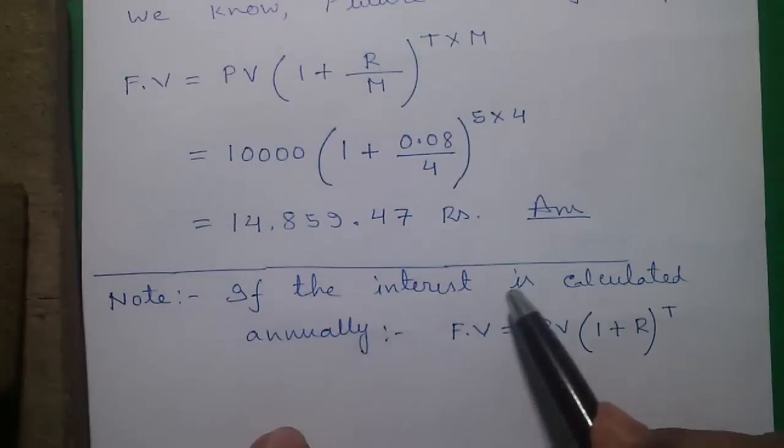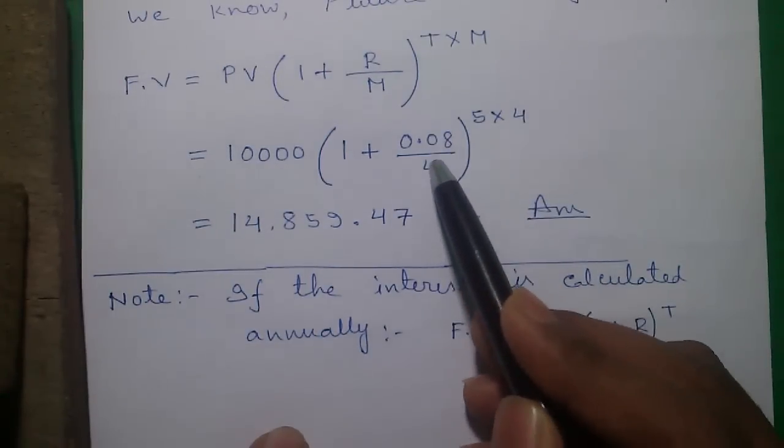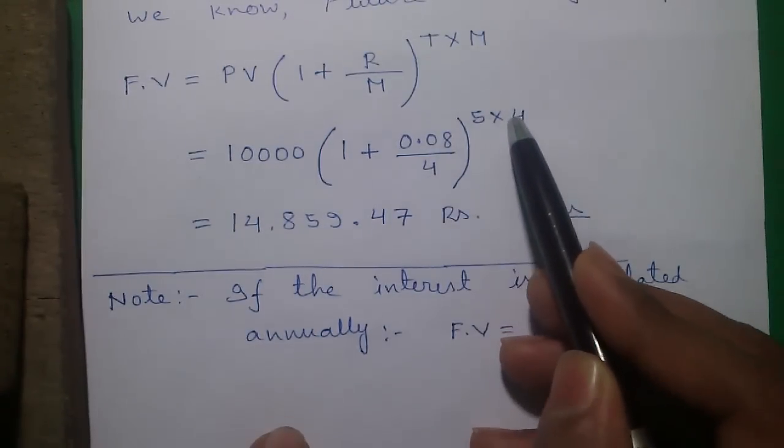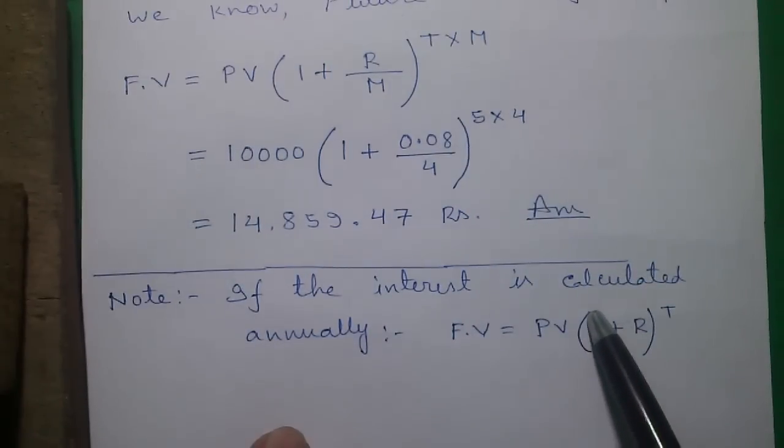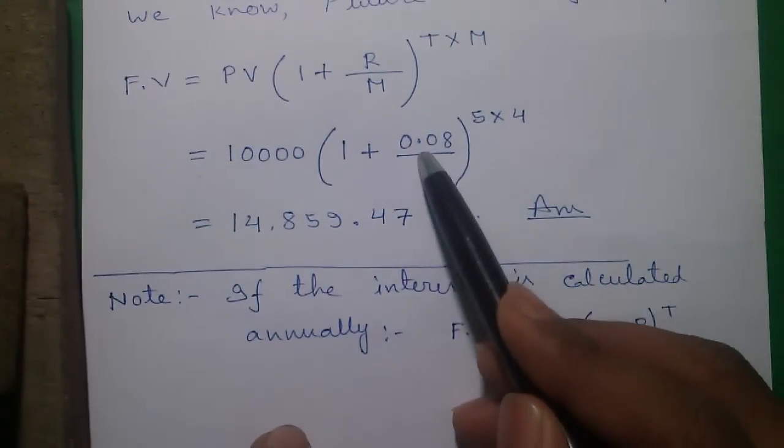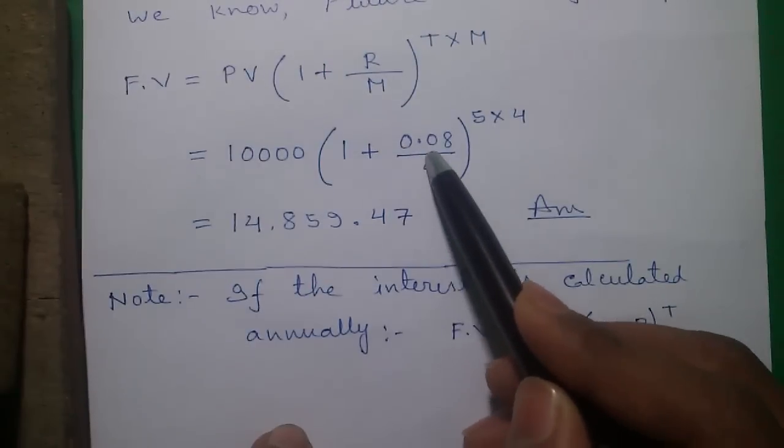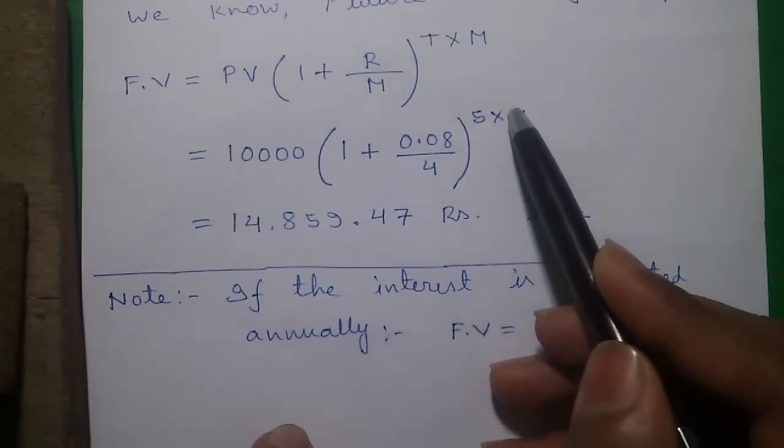Remember, if the interest is calculated annually, that is once in a year, then the formula will be R divided by 1 into T into 1. So that is simply PV into 1 plus R to the power T. This number denotes times per year. If the interest is calculated every month, then it will be R divided by 12 into T into 12.